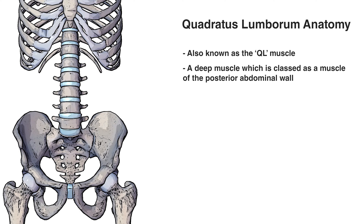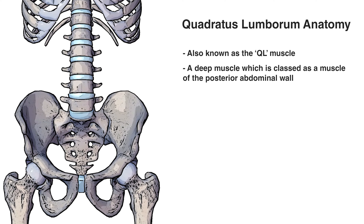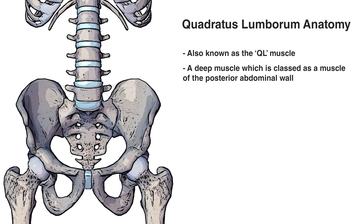We've swapped over to an anterior view now, so we're looking at the skeleton from the front. This is because all of the origins and insertions we're going to look at next are on the anterior of the bones which they connect onto. The origins are now brought into view, marked out in red, and we'll start off by going over the iliolumbar ligament.